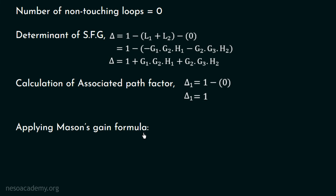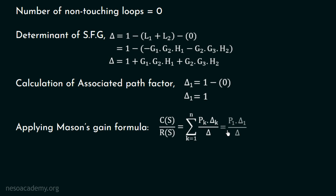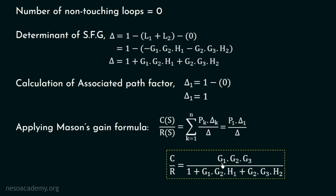Now we have calculated the forward path gain, the loop gains, the determinant of SFG, and the associated path factor. Applying Mason's gain formula: C(s)/R(s) = summation from k=1 to n of P_k × delta_k over delta. Since there is only one forward path, n equals 1, so C(s)/R(s) = P1 × delta1 / delta = G1·G2·G3 / (1 + G1·G2·H1 + G2·G3·H2). This is the overall transfer function of the given block diagram, calculated using the signal flow graph.